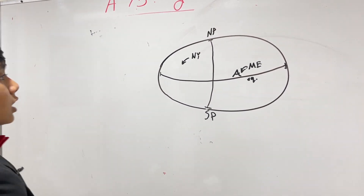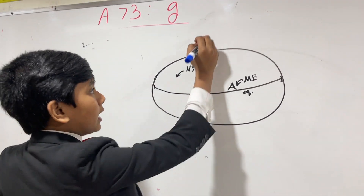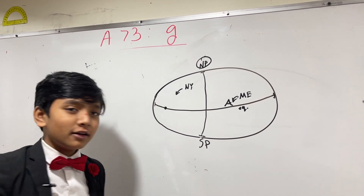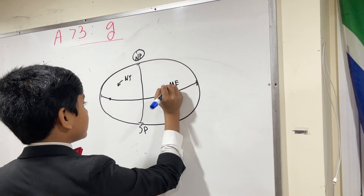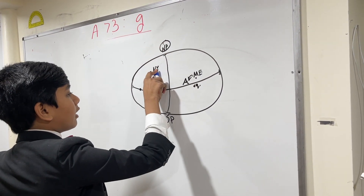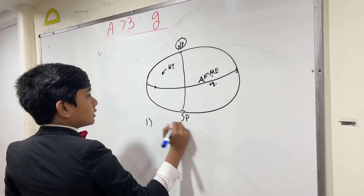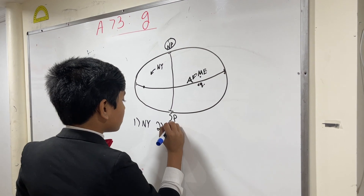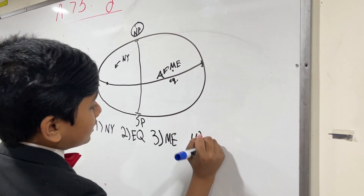So now we have four locations here. We have the North Pole, the equator — specifically Ecuador, or anywhere else on the equator where people live — Mount Everest, and New York. Those are our four locations. So let's say: one is NY, two is Ecuador, three is Mount Everest, and four is the North Pole.